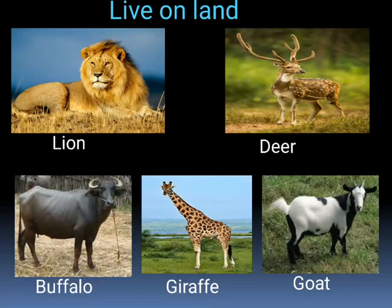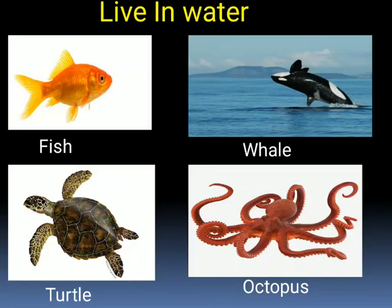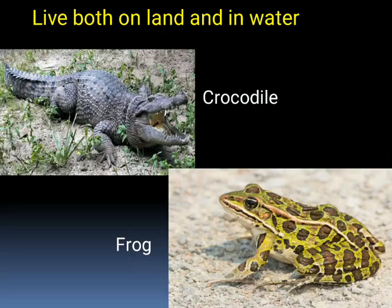Where do animals live? Animals like lion, deer, buffalo, giraffe, goat, etc. live on land. Some animals live in water. Fish, whale, turtle and octopus are examples. Some animals such as crocodile and frog can live both on land and in water.